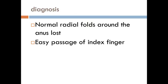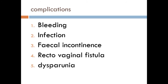How can we diagnose the occurrence of perineal tear? After delivery of the baby, there is postpartum hemorrhage, and by inspection, the tear will extend from the vagina to the anus and the normal radial folds around the anus will be lost. Also, during per rectum examination, there is easy passage of the index finger because of loss of tone of the external anal sphincter.